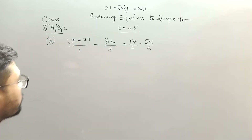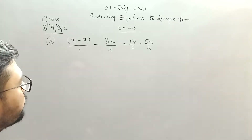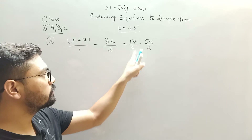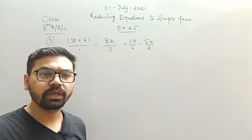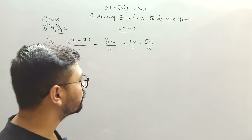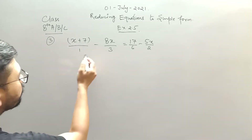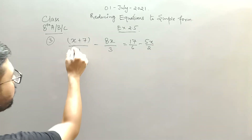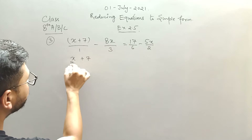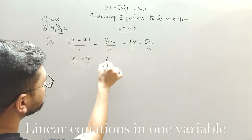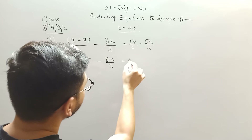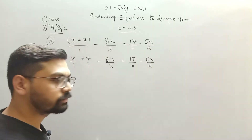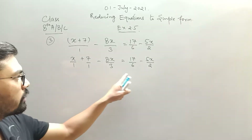Now the third question is: x plus 7 divided by 1 minus 8x divided by 3 on the LHS, and on the RHS you have 17 by 6 minus 5x by 2. The second question is for your homework. First, you can write x plus 7 separately minus 8x divided by 3 equals 17 divided by 6 minus 5x divided by 2.